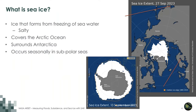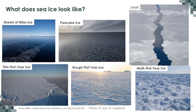So let's start from scratch. What is sea ice? Sea ice is ice that forms from the freezing of ocean water, which means it is very salty. It exists year-round in the Arctic Ocean, surrounds the Antarctic Peninsula, and also occurs in sub-polar seas such as the Baltic Sea and the Sea of Okhotsk. It takes many different shapes, forms, and thicknesses.